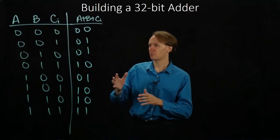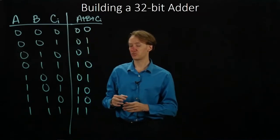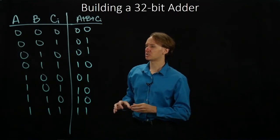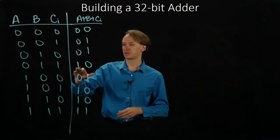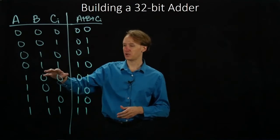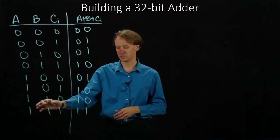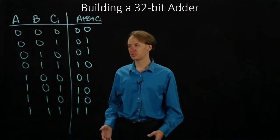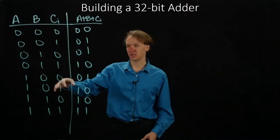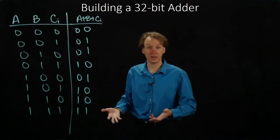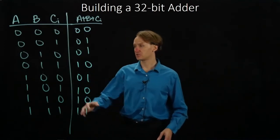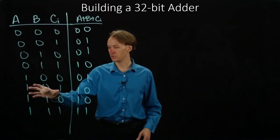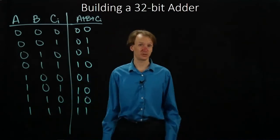Again, our tens column is relatively straightforward. One way we could do is just notice that this is only ever true if at least two of the input bits are also true. This seems reasonable. We need at least two ones coming in to be able to get to ten. So one thing we could do is just find all the cases where two of these input bits are true and set the result to be one.